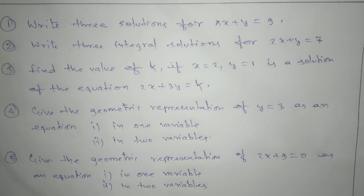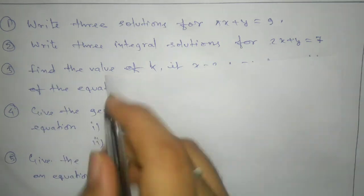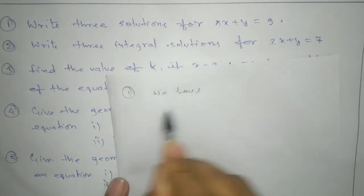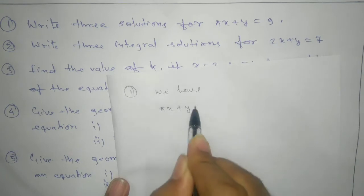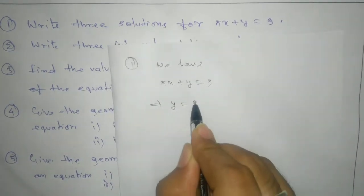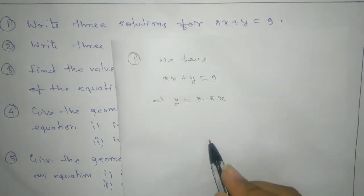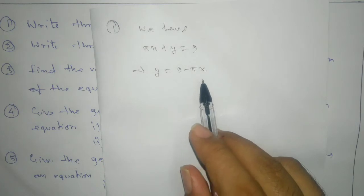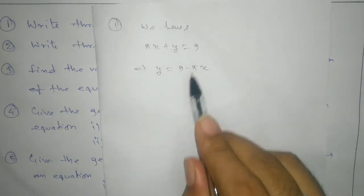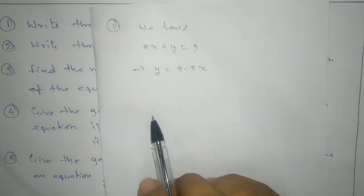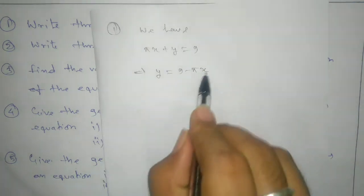Write 3 solutions for π x plus y equals to 9. So, we have π x plus y equals to 9. That means we can write y in terms of x. So many students make a mistake here — they take π equals to 22 by 7, which is totally wrong. Pi is not equal to 22 by 7, so we will keep it as is.